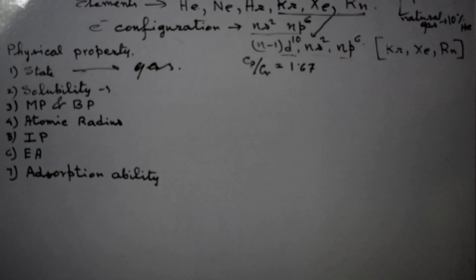So we can say krypton, xenon, and radon have d orbital filled. But helium, neon, and argon have no d orbital. So we can say the general electronic configuration is ns2 and np6. We can also write like this: n-1 d10 ns2 and np6.